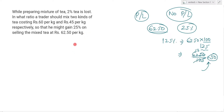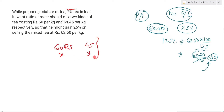Question में यह कह रहा है कि 2% loss हो गया है. तो assume कर लो कि 60 rupees वाला quantity x था, और 45 rupees वाला quantity y था. तो total cost कितना होगा? Simply 60x plus 45y. As simple as that.